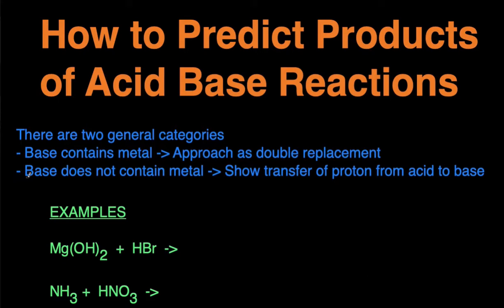But if you look at the base and it does not contain a metal, then you're going to use the definitions of Brønsted-Lowry acid and Brønsted-Lowry base to help you predict the products by showing the transfer of protons from the acid to the base. Let's jump into some examples and reinforce this idea.